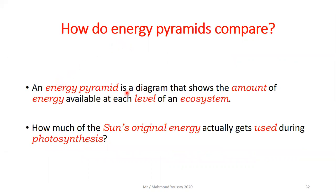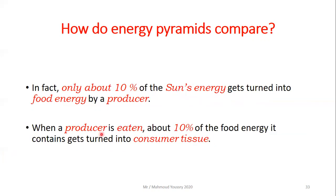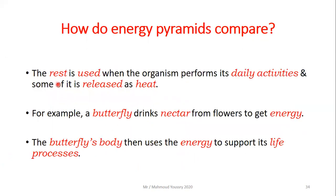An energy pyramid is a diagram that shows the amount of energy available at each level of an ecosystem. Producers use the sun's energy for photosynthesis, but only about 10 percent of the sun's energy gets turned into food by the producer. When a consumer eats a producer, about 10 percent of the food energy it contains is turned into consumer tissue. The amount of available energy becomes less and less moving from one organism to another.